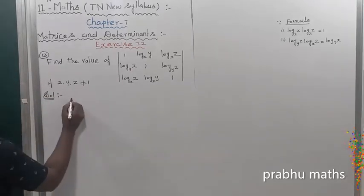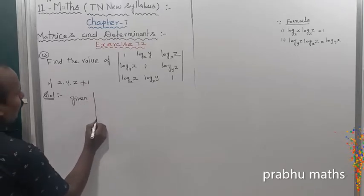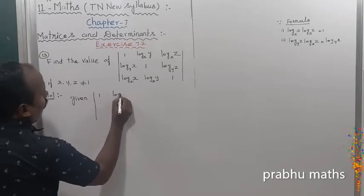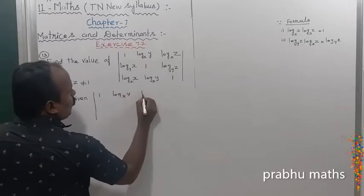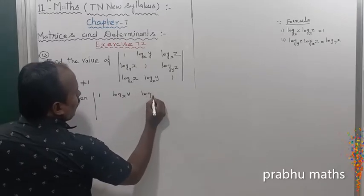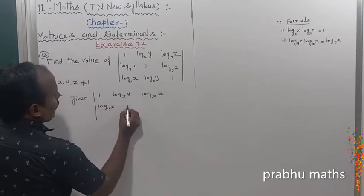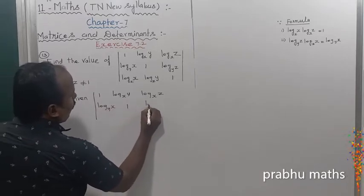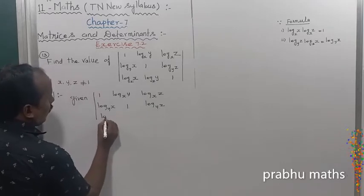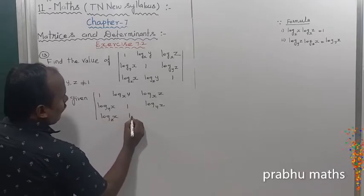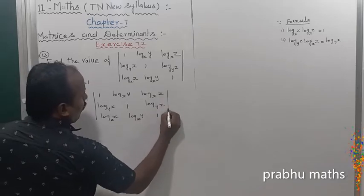First of all, the given matrix is the determinant of: 1, log x y; next one log x z; this one log y x, 1, log y z; next one log z x, log z y, this one 1.